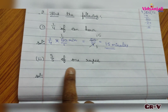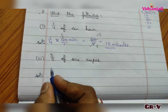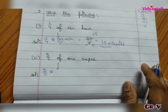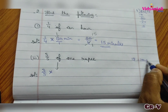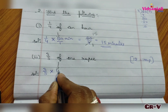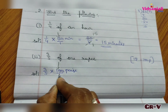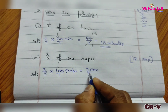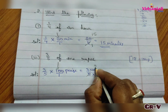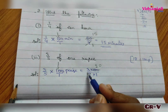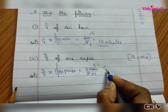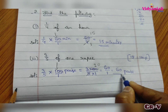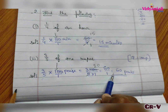Next: 3 by 5 of 1 rupee. We are going to find what is 3 by 5 part of 1 rupee. Of means into. For 1 rupee, how many paise? 100 paise. So 1 rupee means 100 paise. Write 100 paise by 1. Then 3 into 100 by 5 into 1. In the 5 table, 5 times 20 is 100, so cancel 5 with 100 leaving 20. Then 3 into 20 is 60, by 1 into 1 is 1. So the answer is 60 paise. 3 by 5 of 1 rupee is 60 paise.